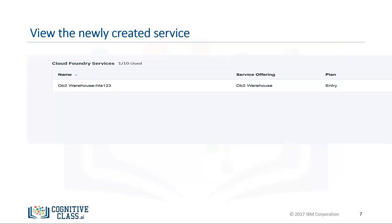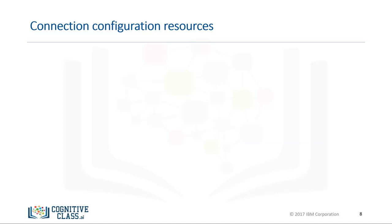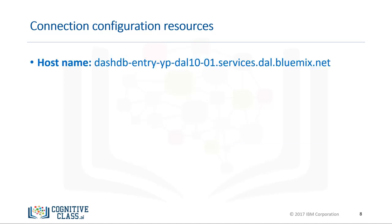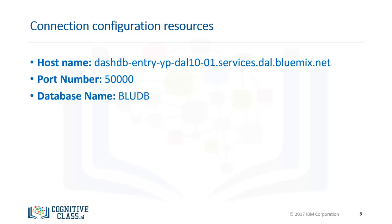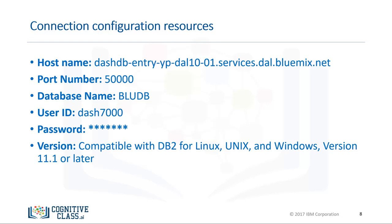You can view the IBM DB2 Warehouse service that you created on your IBM Cloud dashboard. When you open the web console for the DB2 Warehouse on Cloud service, you should be able to see details related to connection configuration. The connection details include: a host name, which is a unique name or label assigned to any device connected to a specific computer network; a port number, which is the database port; the database name; a user ID, which is the username you'll use to connect; a password, which is the password you'll use to connect; and the version of DB2 Warehouse on Cloud. Thank you for watching this video.